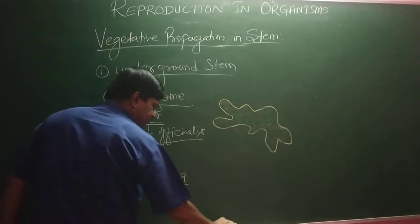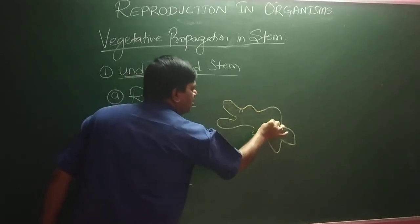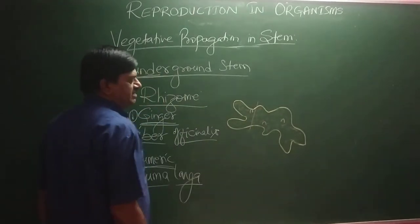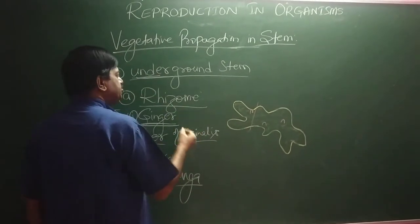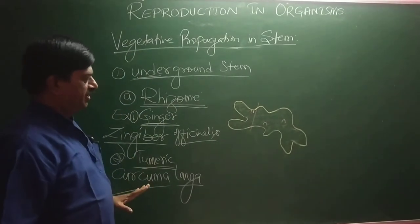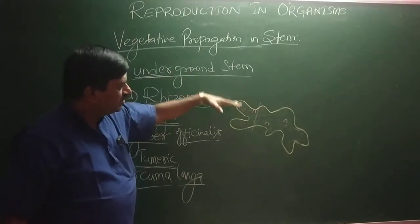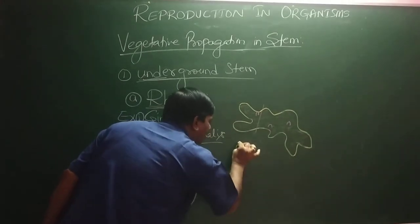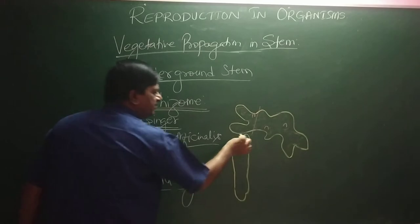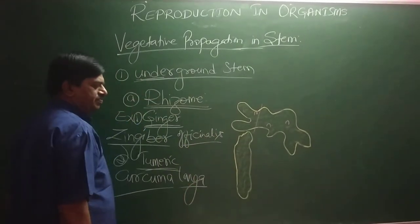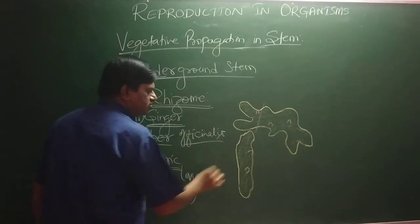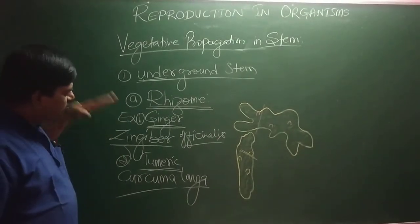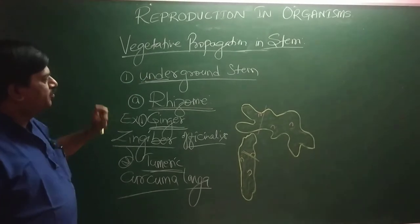The brownish scaly leaf is covered, and at the nodal region there is a presence of axillary buds. When we cut near the axillary buds, these axillary buds give rise to new individuals — hence we call this vegetative propagation. The axillary buds present in ginger, the underground stem, have the capacity to give rise to new individuals. Similarly in Curcuma longa — Turmeric — it has an elongated stem covered by brownish scaly leaves, with nodes and internodes, and axillary buds at the nodal region that give rise to new plants.